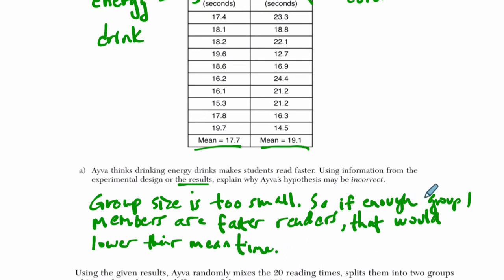So the group size is too small. That's a problem, right? Why is it a problem? Well, if the group size is too small, this could lead to all kinds of problems. For example, if you only have 10 people, you could have selected people who are enough better readers in it that it's their reading ability that could be impacting the time and not the soda. So the group size is too small. So if enough group 1 members are faster readers, that would lower their mean time. Now on the readers in general, I try not to leave it open. I try to be specific. So I said if enough group 1 members are faster readers, that would lower their time. For example, even just 2 members, right? For example.